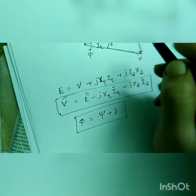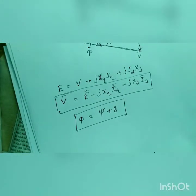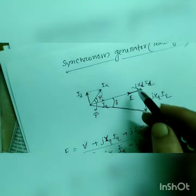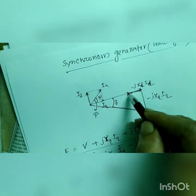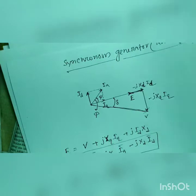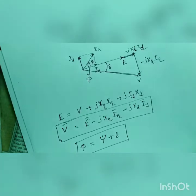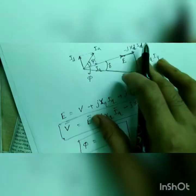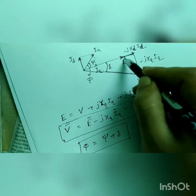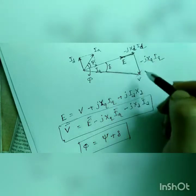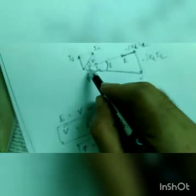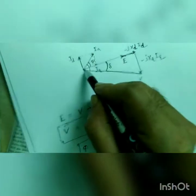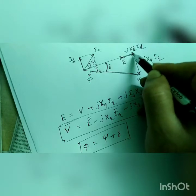And from here, from here we can determine the value of induced emf by just, see here, say this is a, this is v, so this angle is delta, so what will be the length of total length of this line?